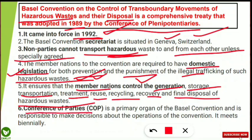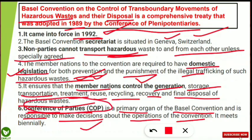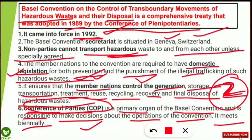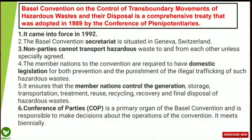The Conference of Parties (COP) is the primary organ of the Basel Convention and is responsible for making decisions about the operation of the convention. It meets biennially — that means every two years. Note down all these points, as questions may come in one form or another.